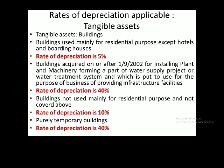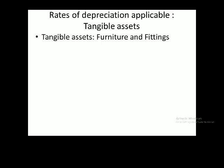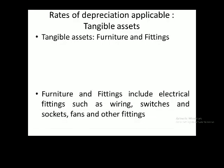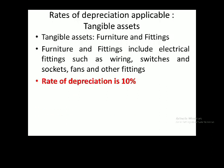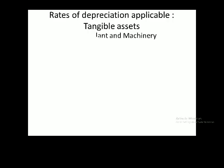The next asset I am going to discuss is furniture and fittings. Furniture and fittings will include electrical fittings such as wirings, switches and sockets, fans and other fittings, which are installed and used in the factory premises. The rate of depreciation applicable is 10%.